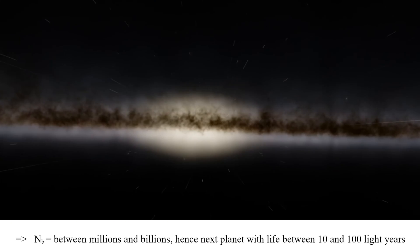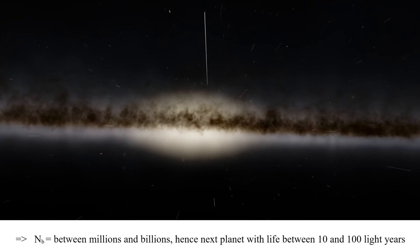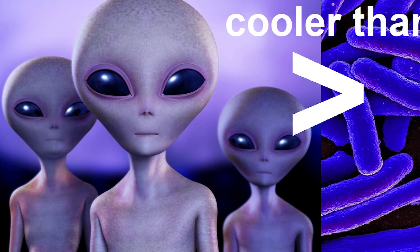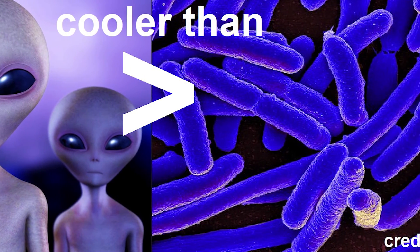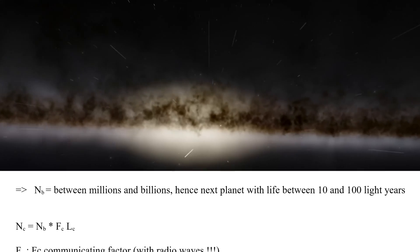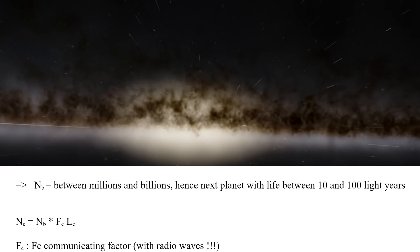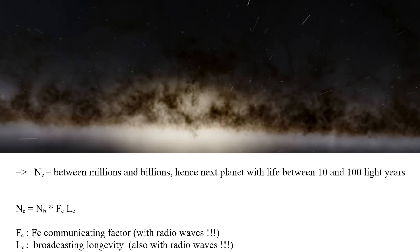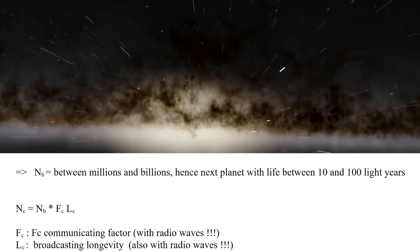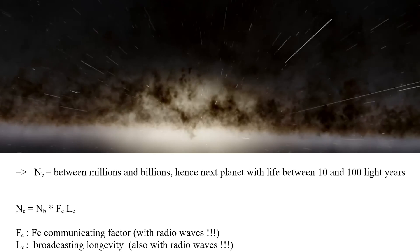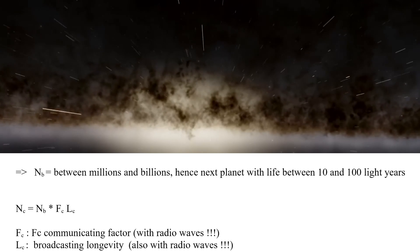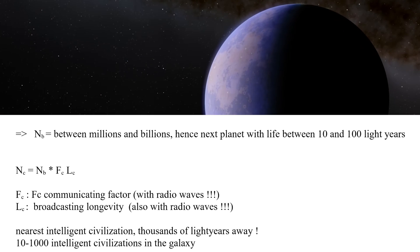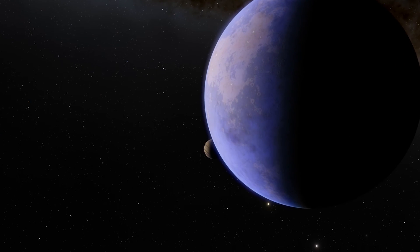But what about the number of intelligent civilizations, Nc, because advanced alien civilizations are certainly more interesting than bacteria? Fc denotes how many civilizations would be willing to communicate, and LCD denotes for how long they would be broadcasting. Note that this is meant for communication with radio waves. The result depends again on the choice of parameters, but we arrive pessimistically at around 10 civilizations, and up to the order of thousands of civilizations in an optimistic case. So quite a big uncertainty there.